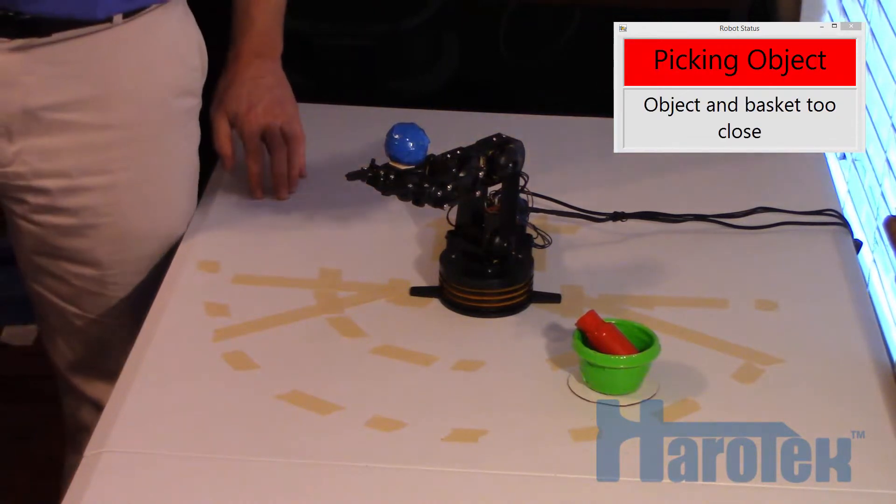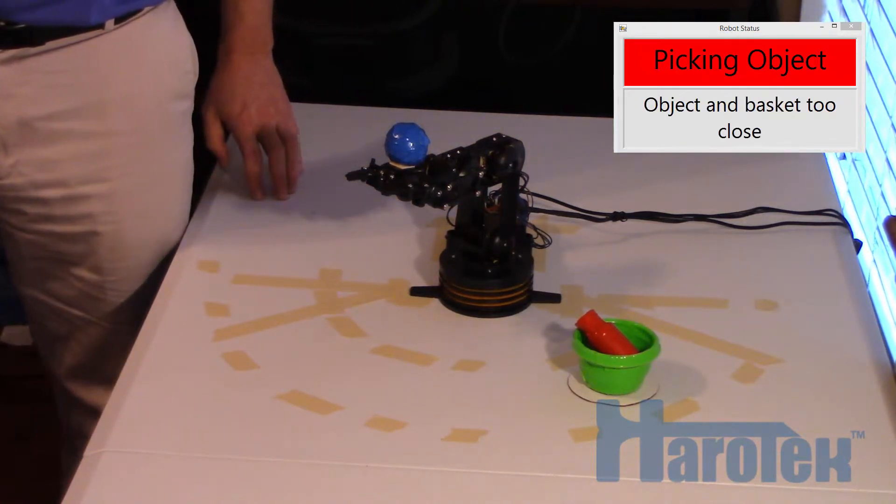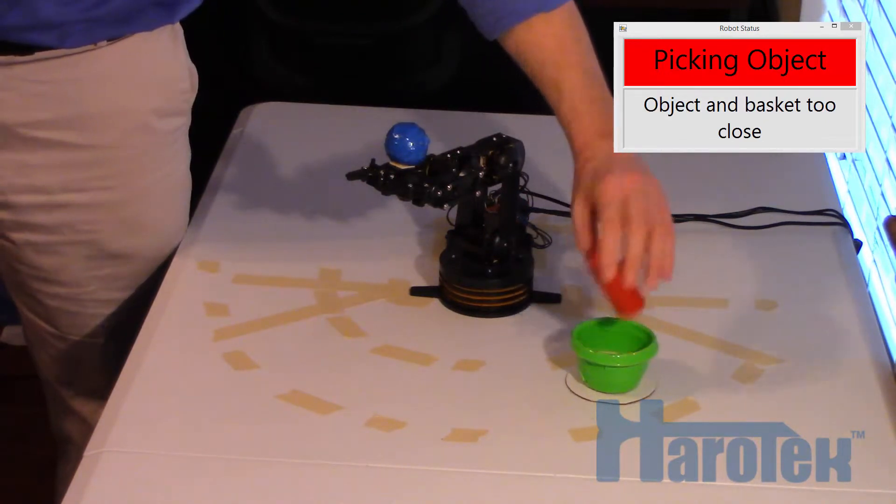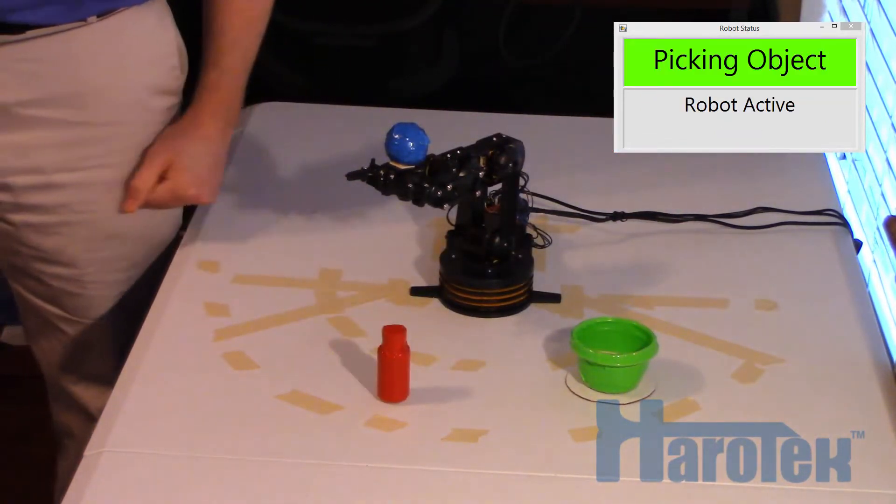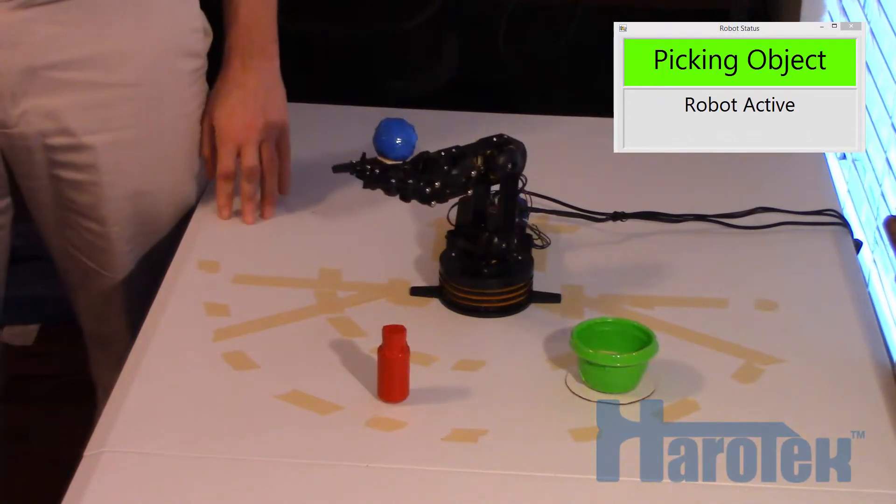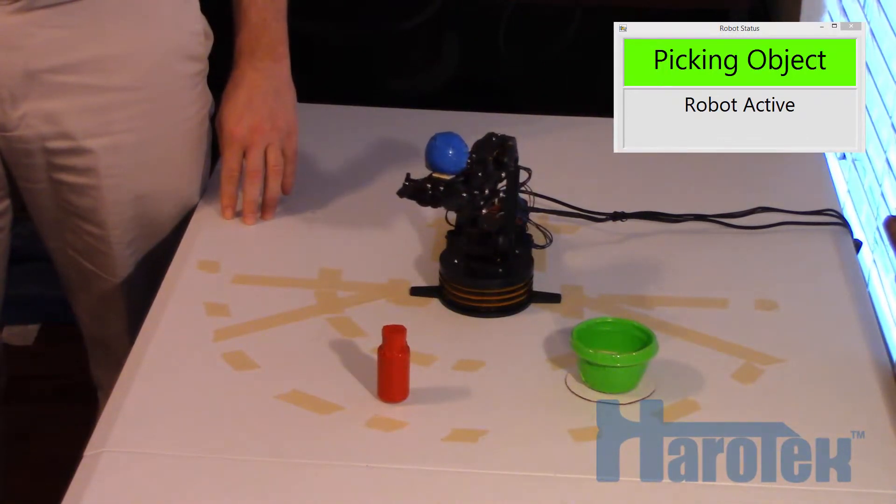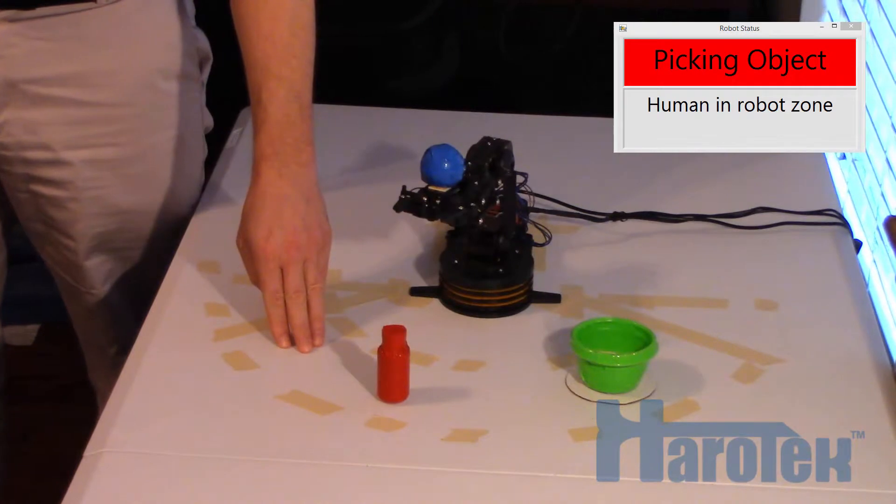In the upper right corner of the video, the status window of the software is shown. The top line indicates the current step of the process and the color indicates the status. Green for active and red for inactive. The second and third text lines are complementary information about the status.